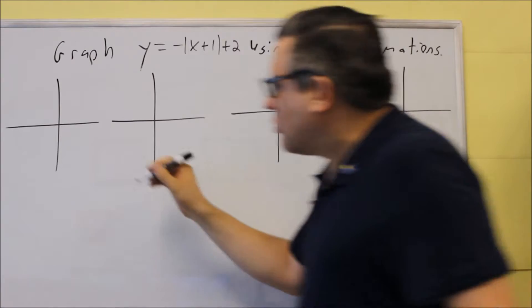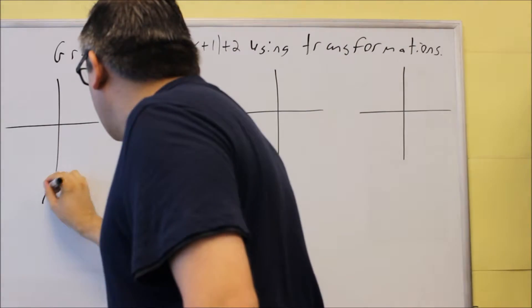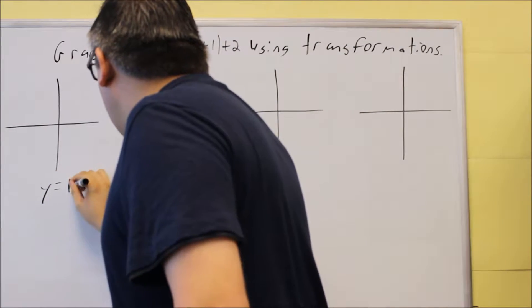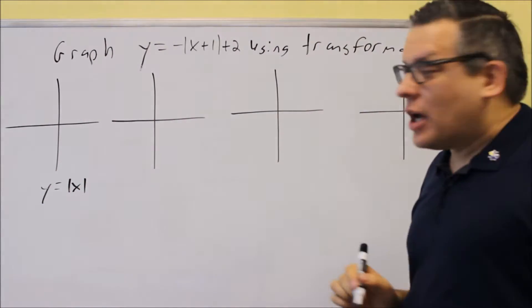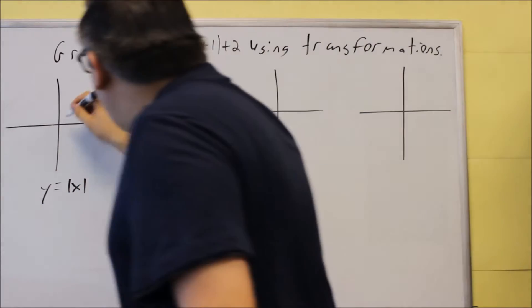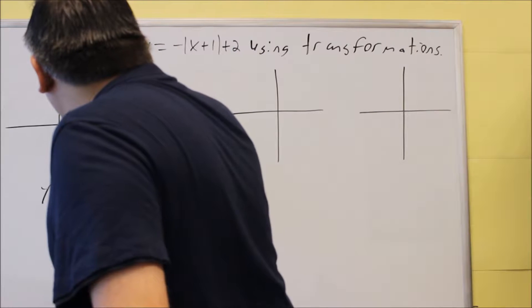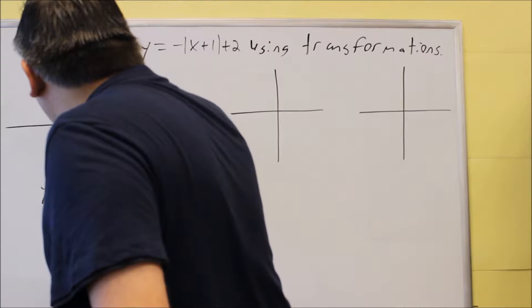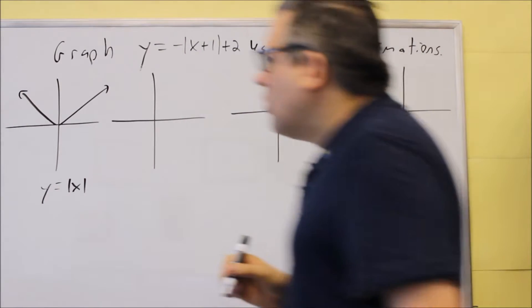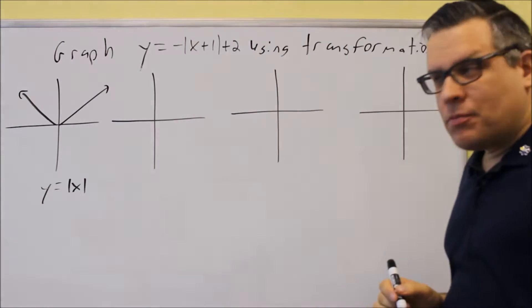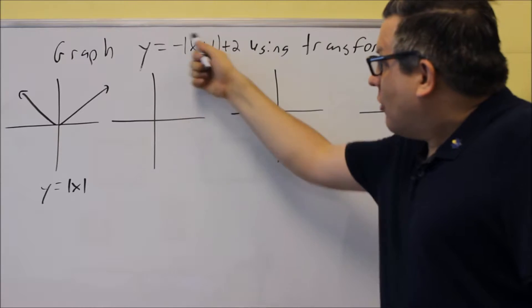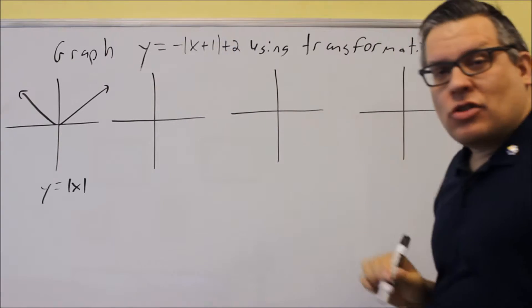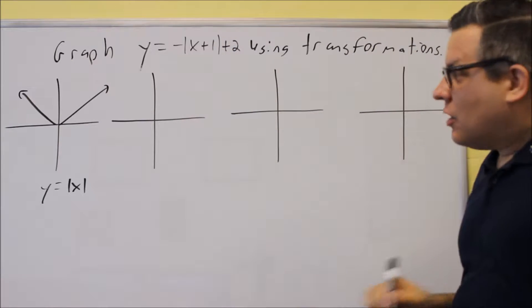The first thing you always start with is the base graph of y equals absolute value of x. We're going to go ahead and put that sketch right there, because you've got absolute values in the original problem.